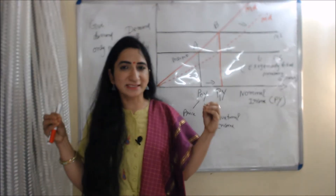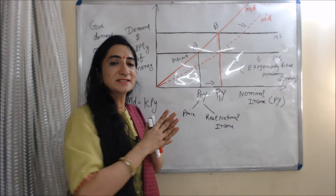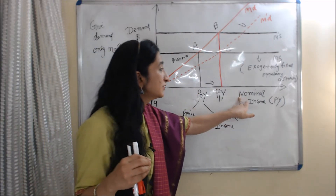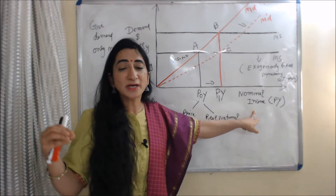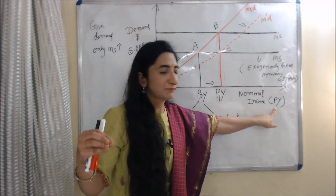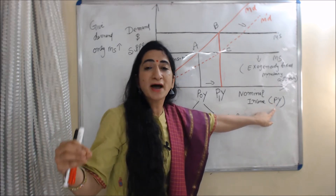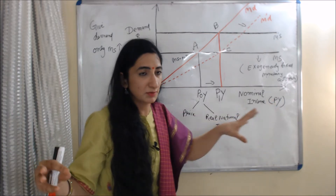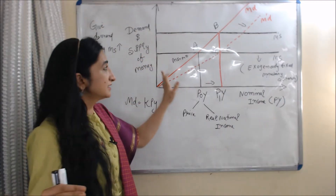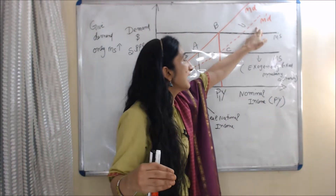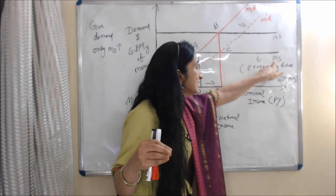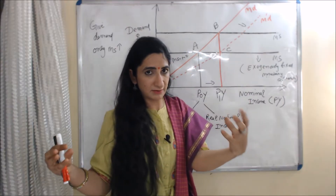We understand this theory with the help of a diagram. On the X-axis we have nominal income — that is P into Y, where P is price and Y is real national income. On the Y-axis we have demand and supply of money. The red curve MD is the money demand curve, and the black curve MS is the money supply curve.